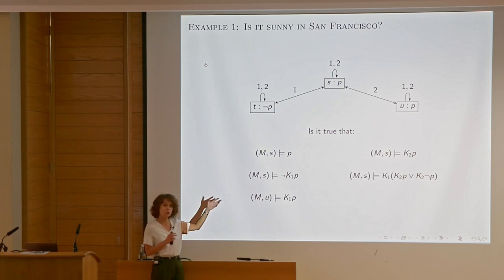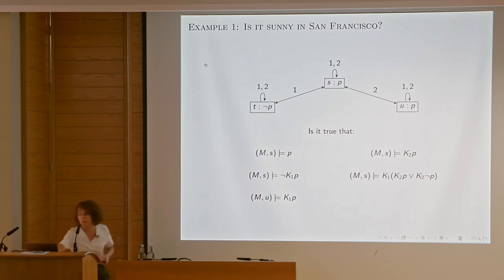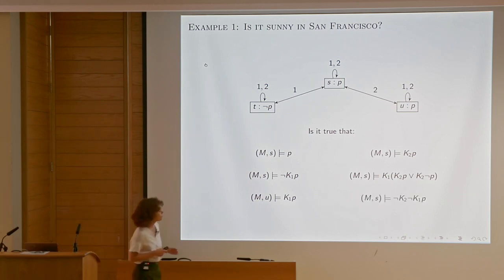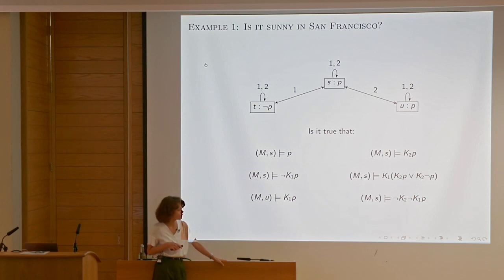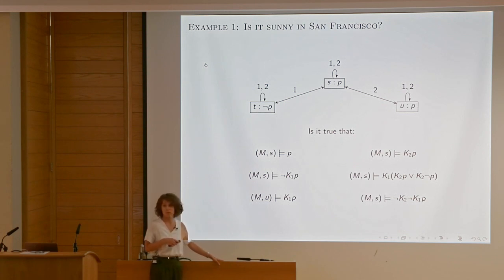The final example: it's not the case that agent two knows that agent one doesn't know B. We have to check at state s whether there is an accessible possible world for agent two in which the negation of it is true. I'll leave it as an exercise — you can go through the graph yourself.